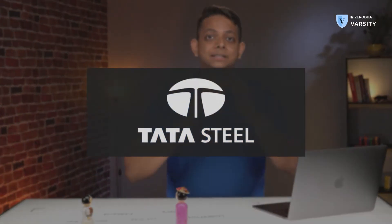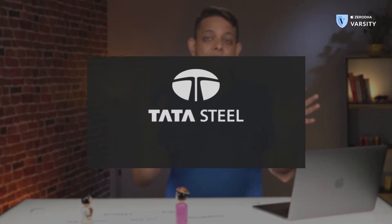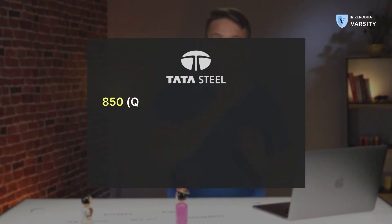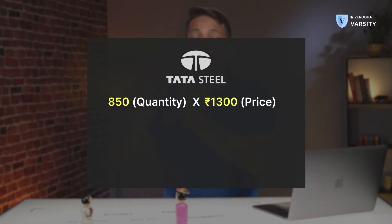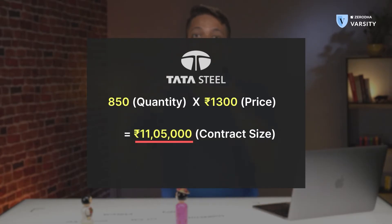The contract size is next. The contract size is the number of shares you are trading multiplied by the actual price of the shares or any other unit. So suppose you are trading Tata Steel — the minimum number of shares multiplied by the price of Tata Steel gives you the contract size, or the contract value that you are trading.